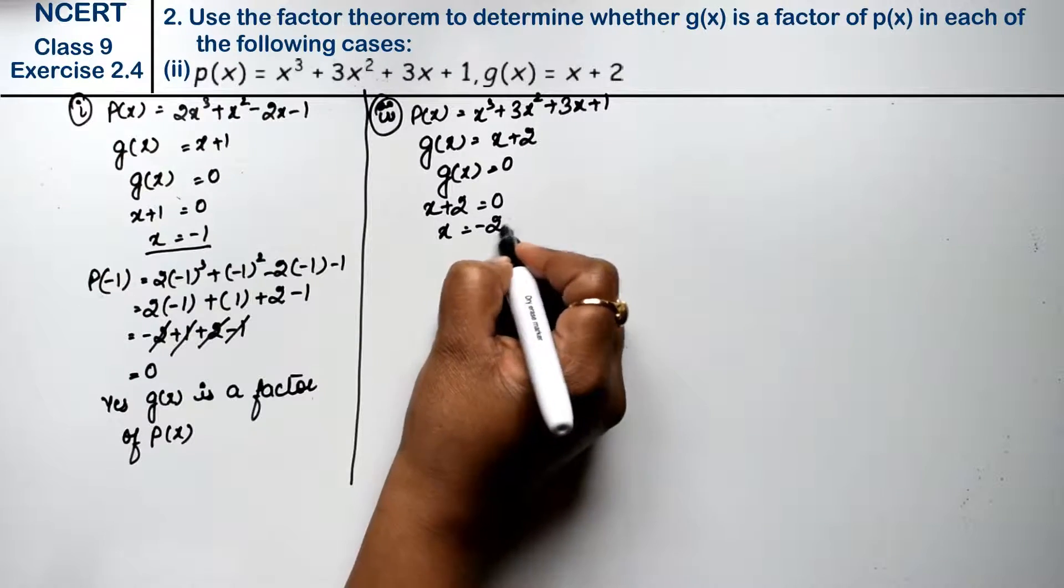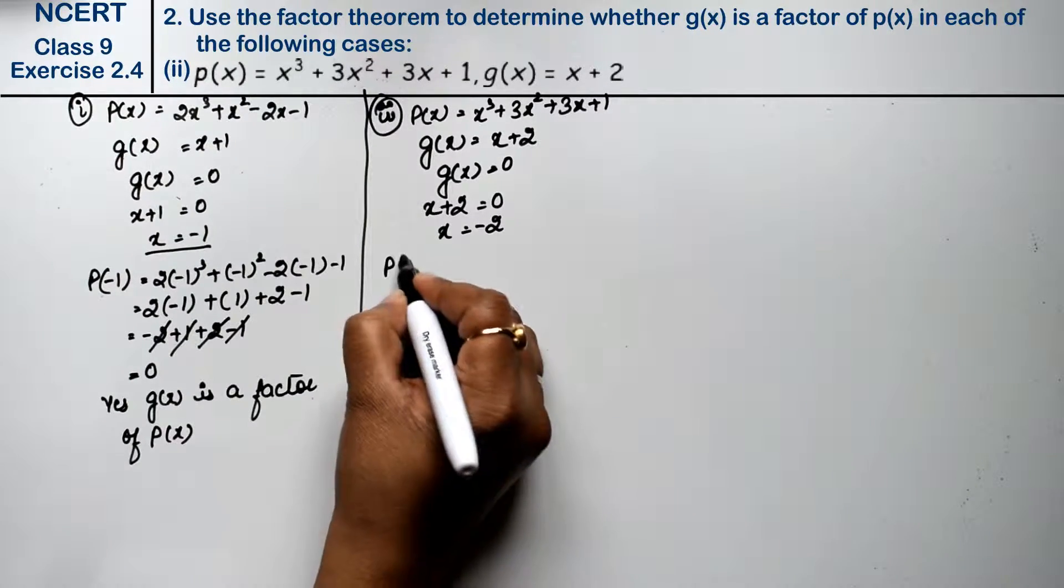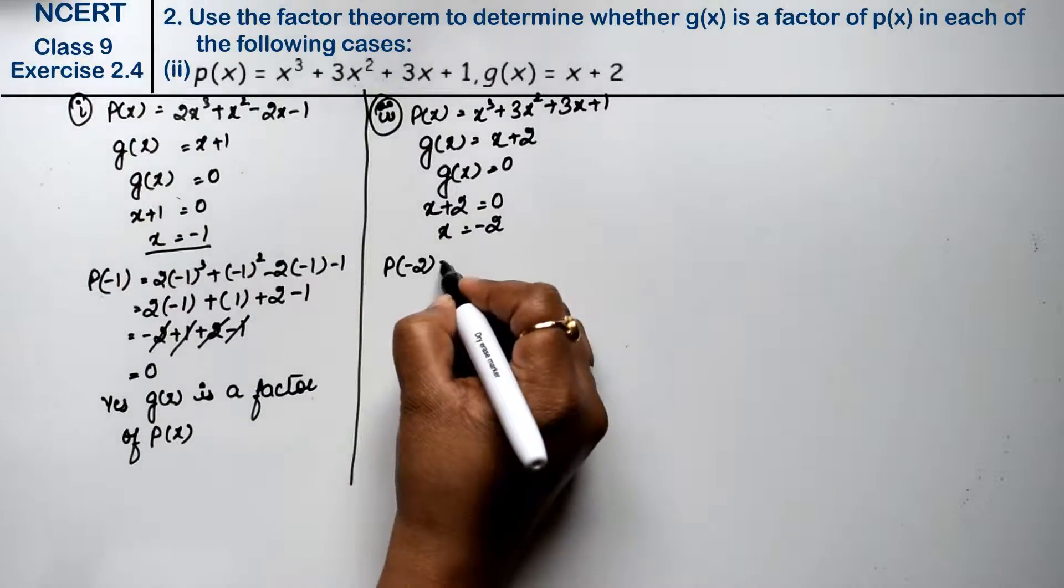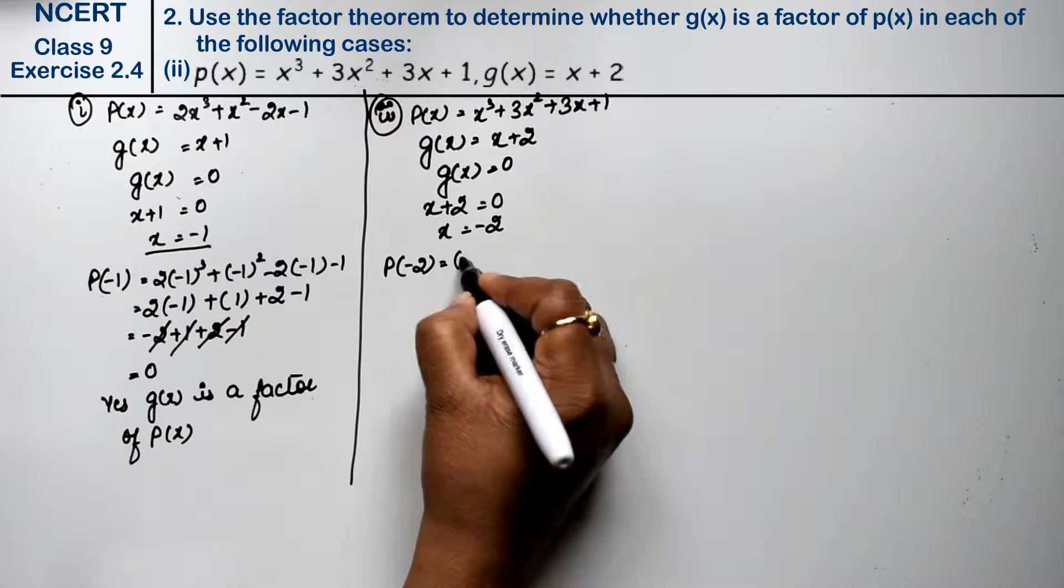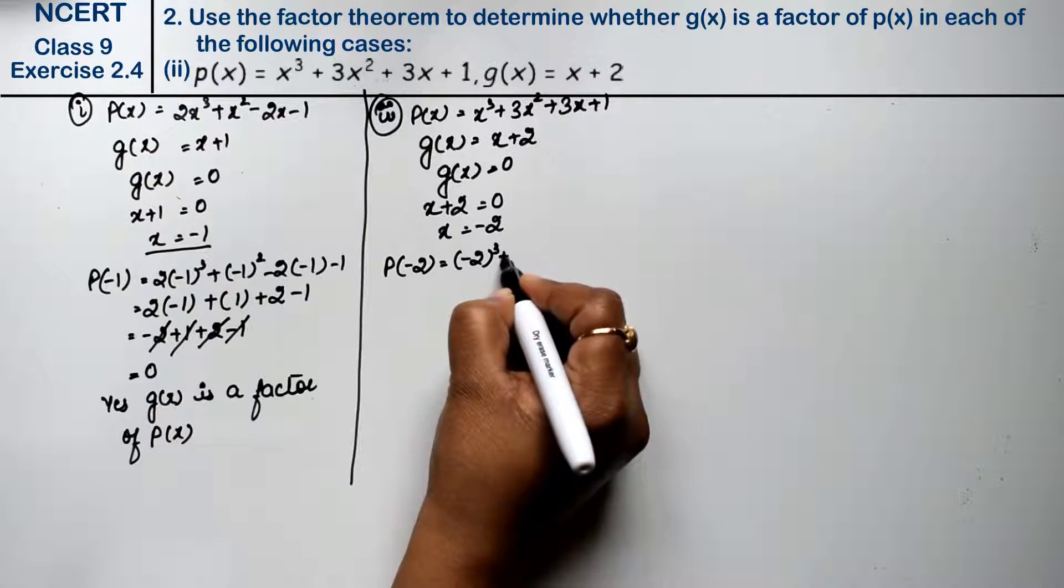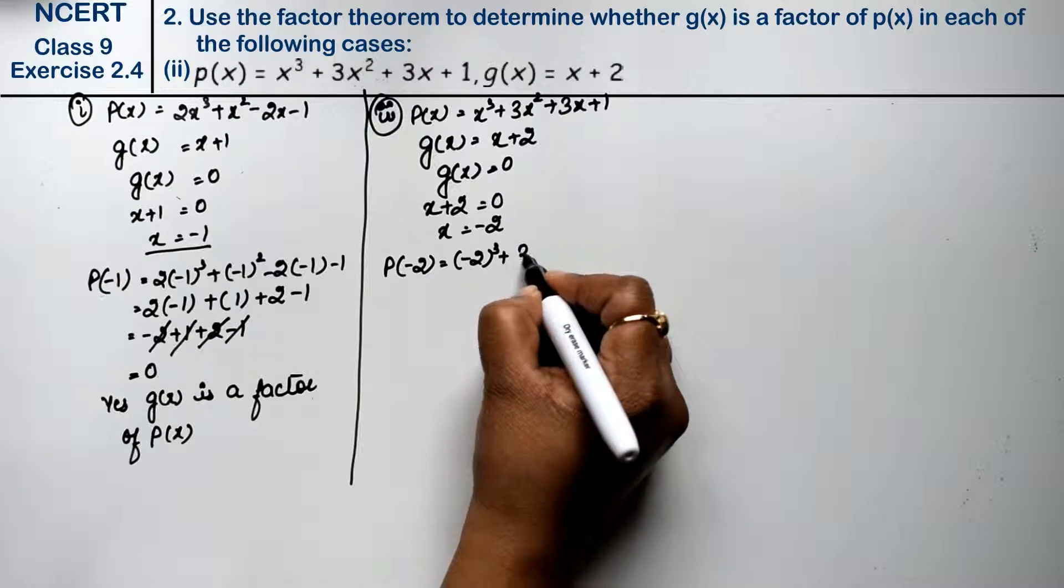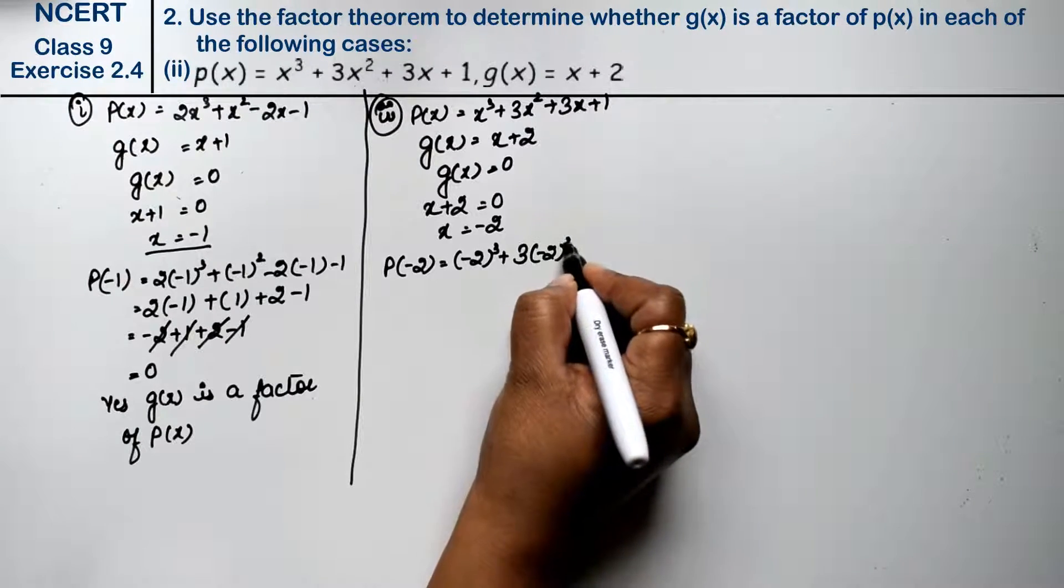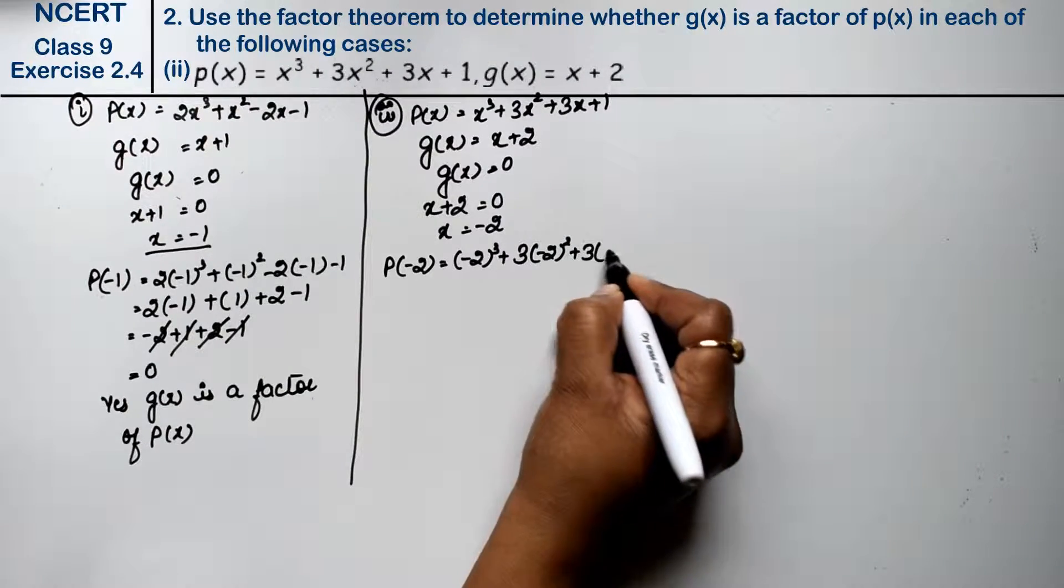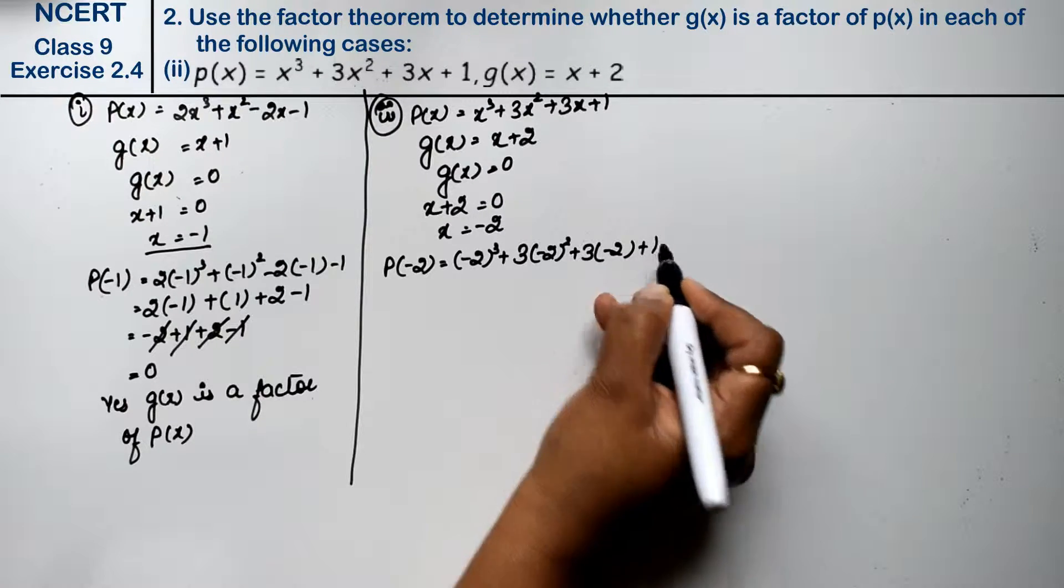Now, p(-2). So: (-2)³ + 3 × (-2)² + 3 × (-2) + 1. You can see here: minus cubed, so minus.